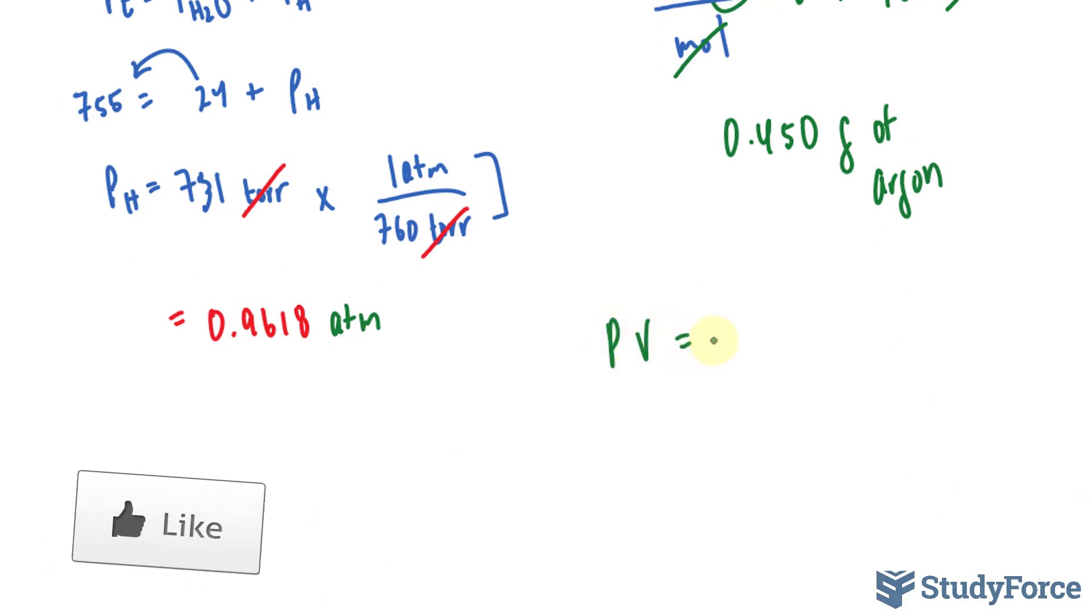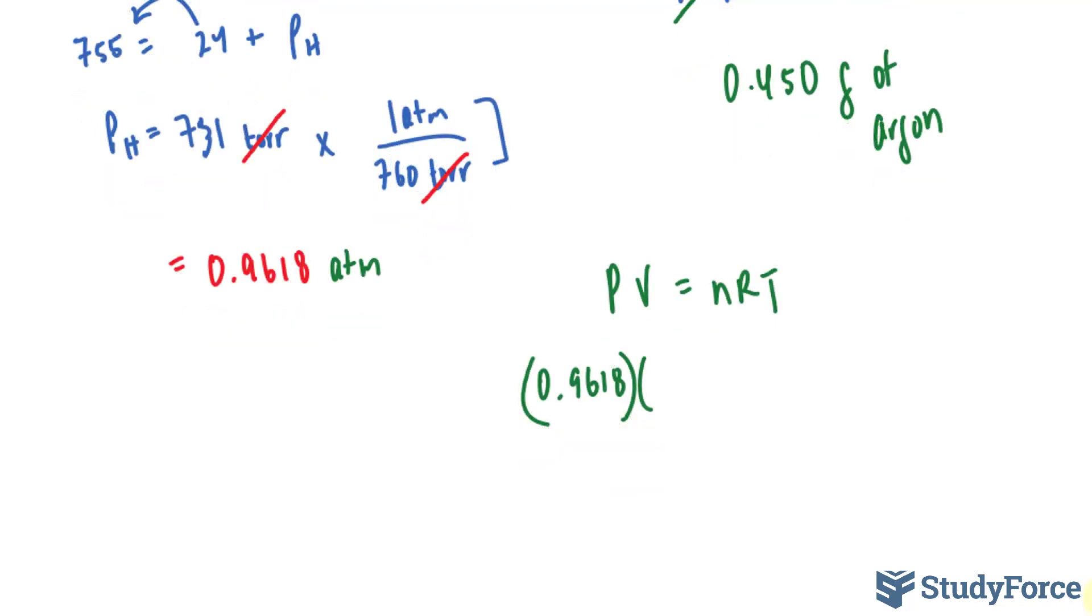PV is equal to nRT. I'll substitute this value into there, 0.9618. My volume, according to the question, is 1.55 liters. I'm looking for n, so I'll divide both sides by RT, and R is the gas constant, which I was referring to earlier, it's 0.082057, and that's being multiplied to a temperature of 298. By calculating everything that you see here, you'll end up with the number of moles.